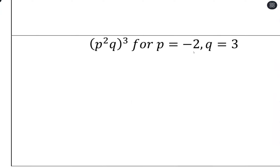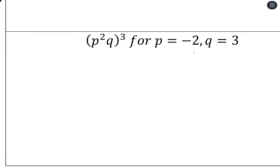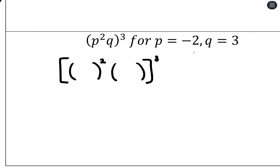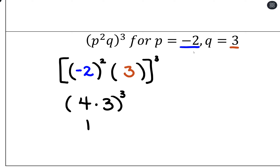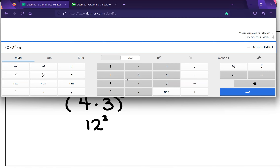Now working with multiple variables: we have (p²q)³, which expands to (p²)³ times q³, or p² in parentheses squared times q cubed. With p = negative 2 and q = 3: negative 2 squared is positive 4, multiplied by 3, and we cube all of that together. So we get 12 cubed, which the calculator gives us as 1728.